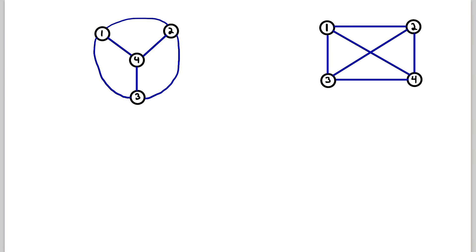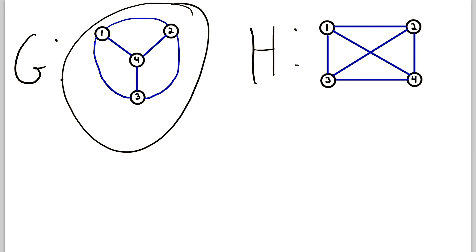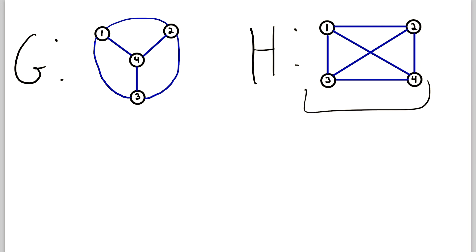One other thing I want to touch on is the visual representations of a graph. A graph is an ordered pair with a vertex and an edge set — that's a formal definition. But we can also draw them visually. Let's name these graphs: this one is G and this one is H. The point is that while these graphs look different, they are in fact the same graph. You can draw any graph in an infinite number of ways.